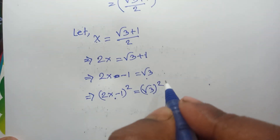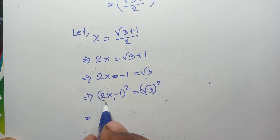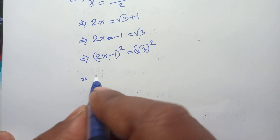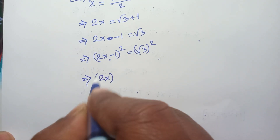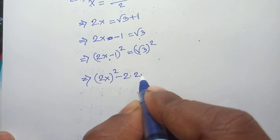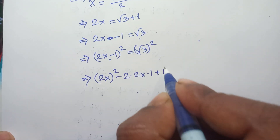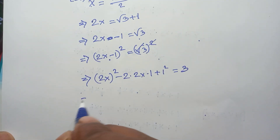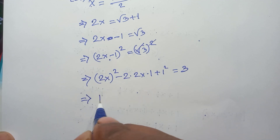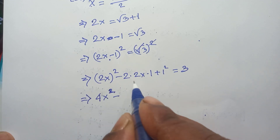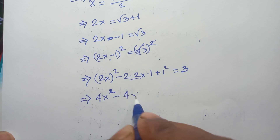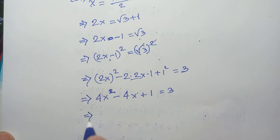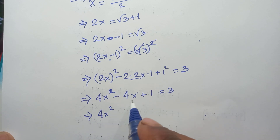Squaring both sides: (2x − 1)² = (√3)². Applying the (a − b)² formula, the left side expands to 4x² − 2·(2x)·1 + 1² = 4x² − 4x + 1. The right side: the square cancels the root, giving 3.